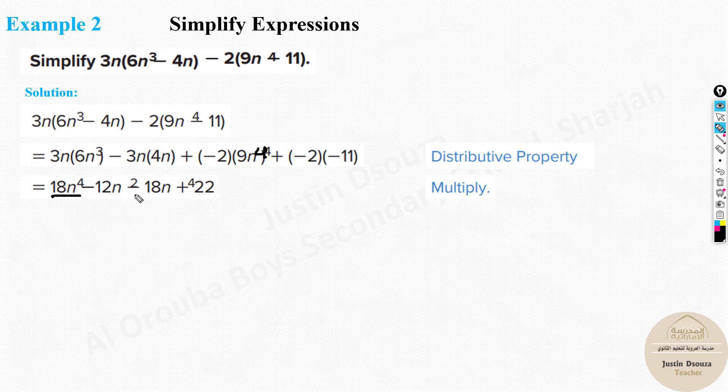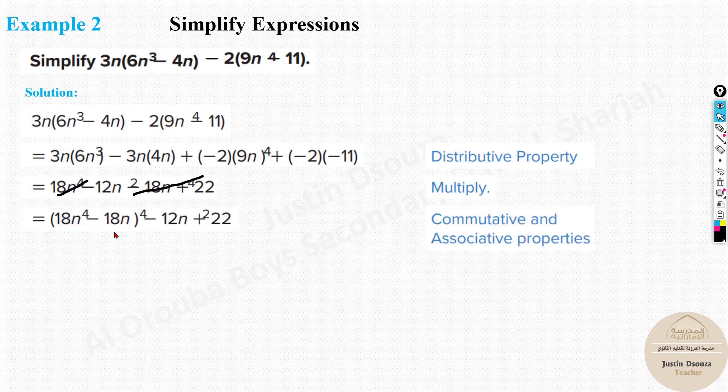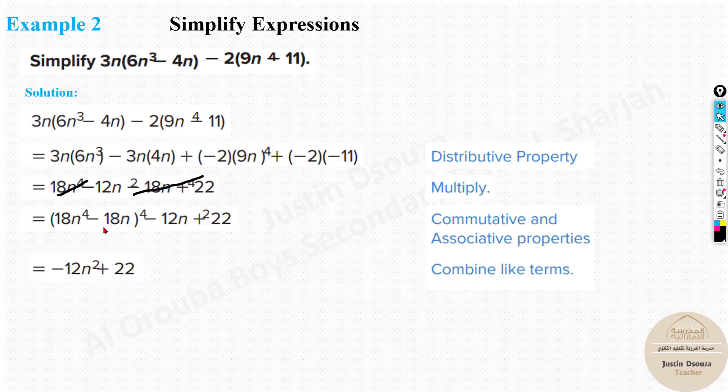Look over here. The degree n to the power 4 and n to the power 4 are repeated twice. So what happens basically is positive 18 minus 18 will be 0. So this cancels out. 18 n to the power 4 minus 18 n to the power 4. So you are remaining with minus 12 n squared plus 22. You don't need to do all this step directly. You can write the answer from here. You can jump to this. This is how we can solve it.